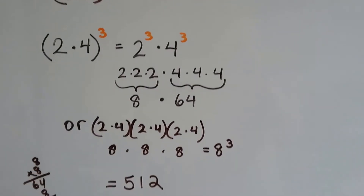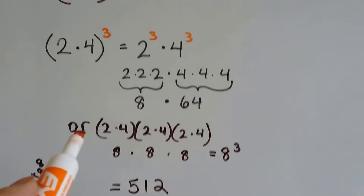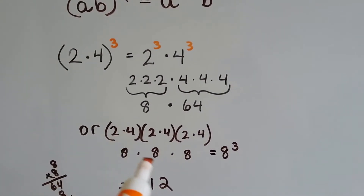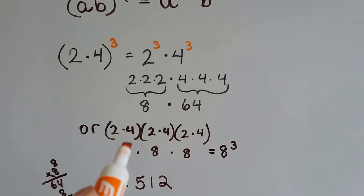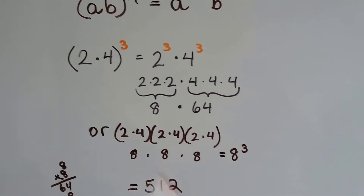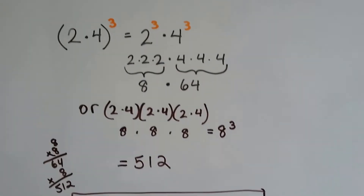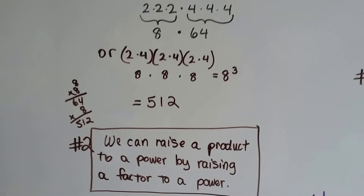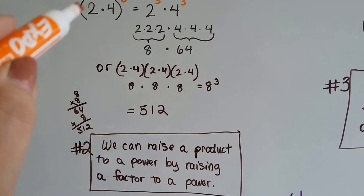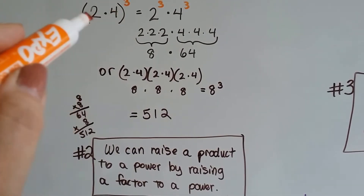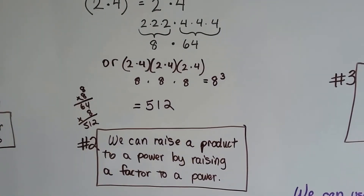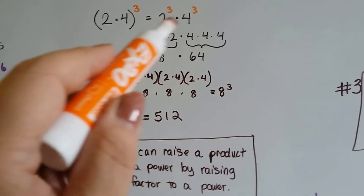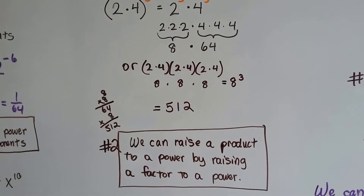We could also say this whole thing is 2 times 4 to the 3rd power — so 2 times 4, and 2 times 4, and 2 times 4, which would be 8 times 8 times 8, or 8 to the 3rd power. It's the same thing, and it would equal 512 no matter how we did this. So we can raise a product to a power — the product here would be 8 — by raising each factor to that power. Each of these are the factors of 8.